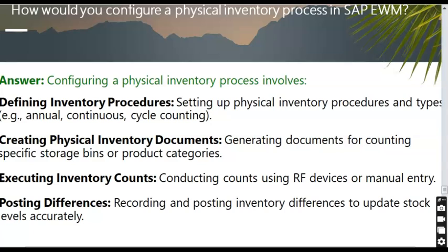How would you configure a physical inventory process in SAP EWM? Configuring a physical inventory process involves defining inventory procedures and types such as annual or continuous cycle counting, creating physical inventory documents for counting specific storage bins or product categories, executing inventory counts using RF devices or manual entry, and posting differences to record and update stock levels accurately.